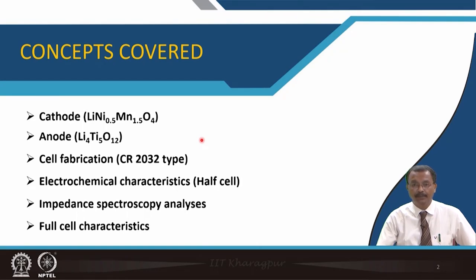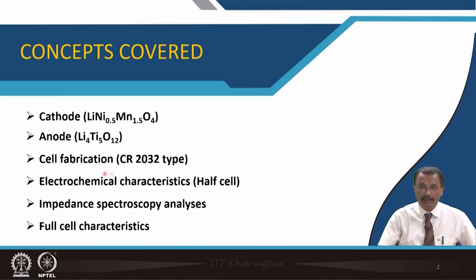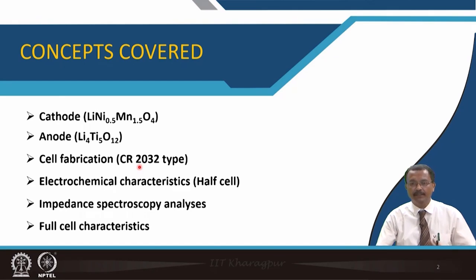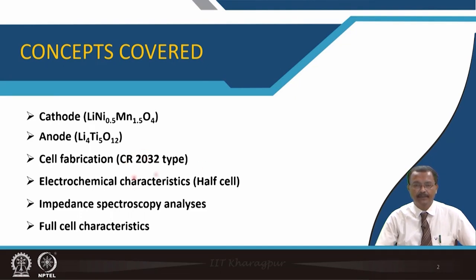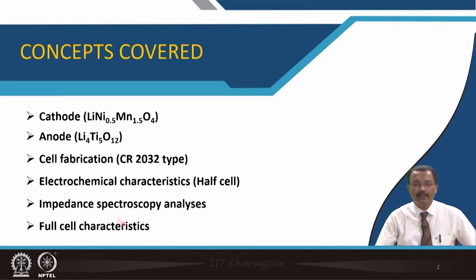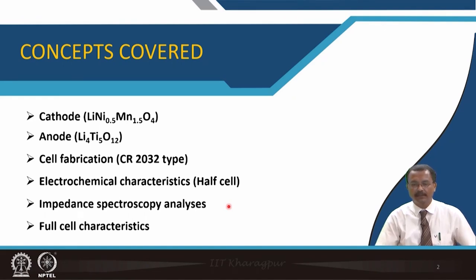To measure the electrochemical properties, we need to construct the cell in coin cell configuration. There are various types of coin cells. The fabrication facilities in my laboratory allow us to make CR2032 type cells, where 20 is the diameter in millimeters and 3.2 millimeters is the thickness — hence the name. We will discuss the electrochemical characteristics in half cell configuration, impedance spectroscopy measurements, and also the full cell characteristics.